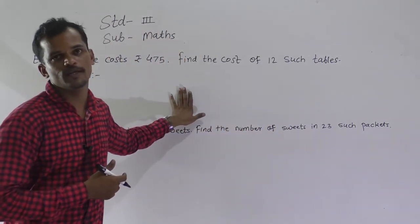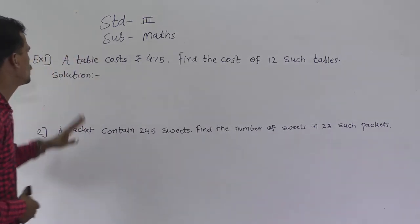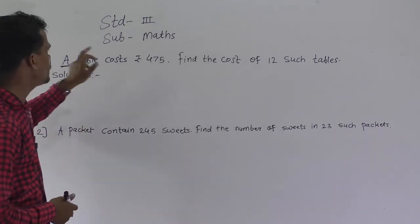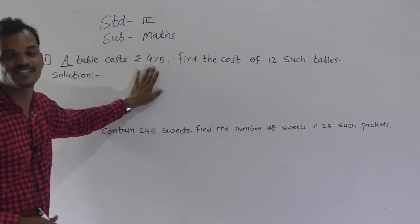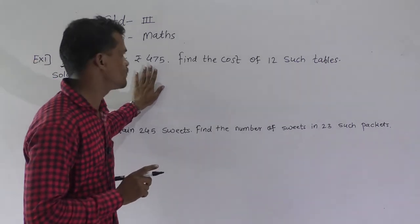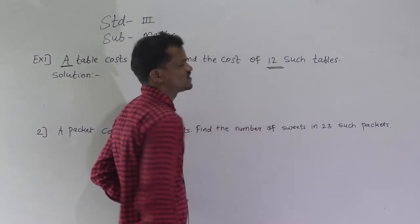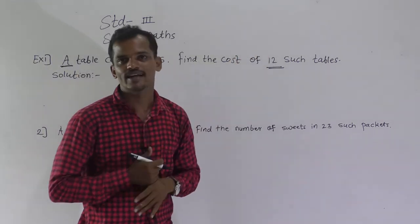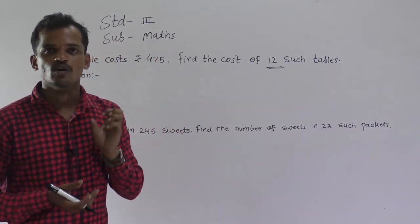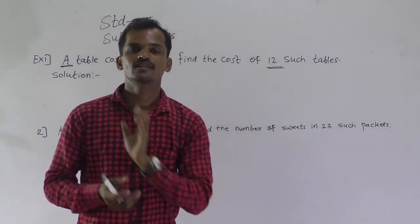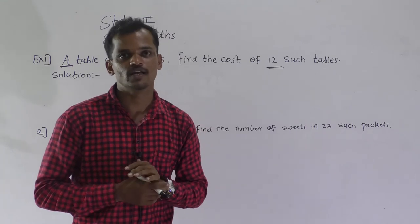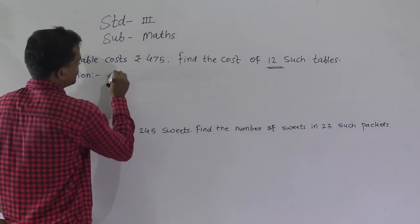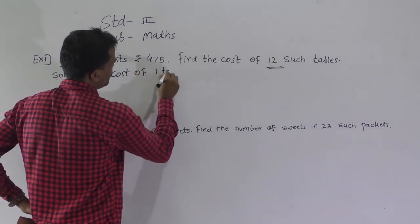Now we will solve this multiplication word problem. Read this example: a table — meaning one single table — costs rupees 475. Find the cost of 12 such tables. Here, cost of one table is given and they ask the cost of 12 tables, so we use the formula: one thing given, many things to find — do multiplication.